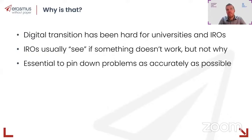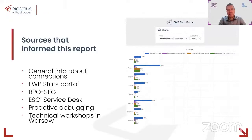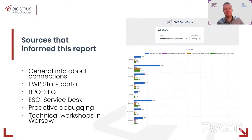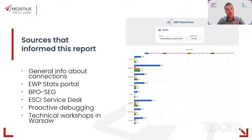We created this assessment report as part of the action plan. When we started this exercise, it was based on information we had available. You will have already noticed that more and more actions have been taken by the EWP Consortium, like the ESCI Service Desk that was presented at earlier webinars. There is also the governance structure with some representation from the end users community — the so-called Business Process Owner Forum with the Standing Expert Group. There is also general information about connections in the network, and recently the EWP Stats Portal was launched.